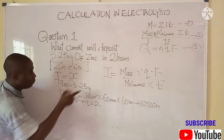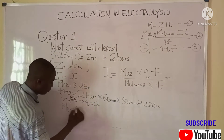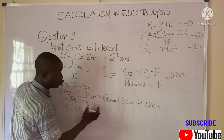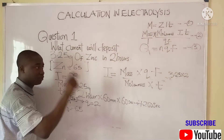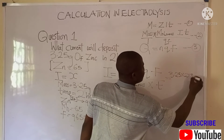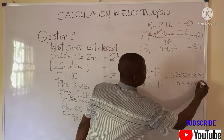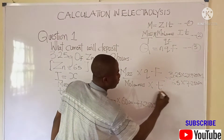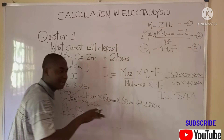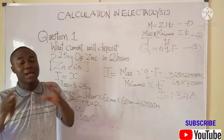The molar mass of zinc is 65 g/mol. Substituting: i = (3.25 × 2 × 96,500) / (65 × 7,200). Calculating gives i = 1.34 amperes. Recall the unit for current is amperes. This is the solution to the first practice problem.